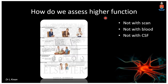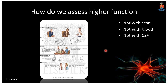The way we assess higher functioning is to do a cognitive assessment on these patients. You cannot do a scan, blood test, or CSF to see whether a patient has a cognitive problem — you have to investigate them clinically. Although we do have to perform certain investigations to find the cause of the cognitive disorder, assessing the disorder itself must be done clinically, and clinical intuition will guide you.